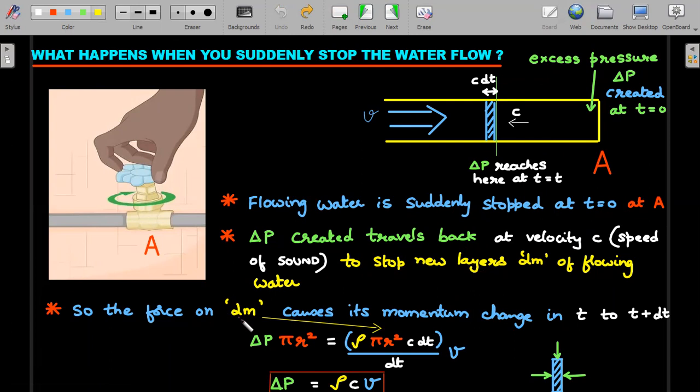Now let's read step by step what I explained. Flowing water is suddenly stopped at t = 0 at point A, and ΔP created at this A travels back at velocity c, which is speed of sound, to stop new layers dm of flowing water. The force on this dm element causes its momentum change in t to t + dt seconds here.